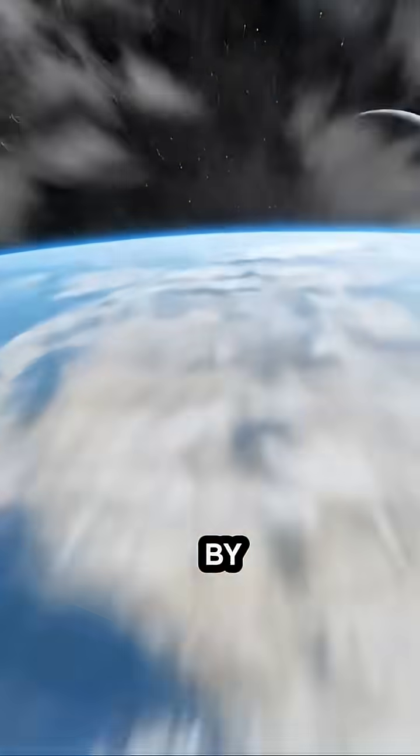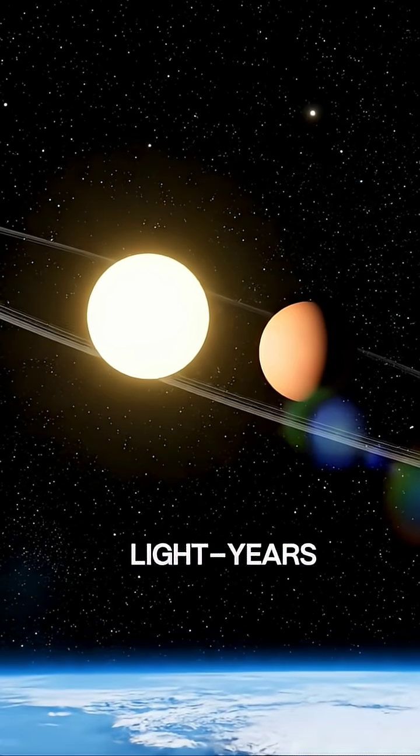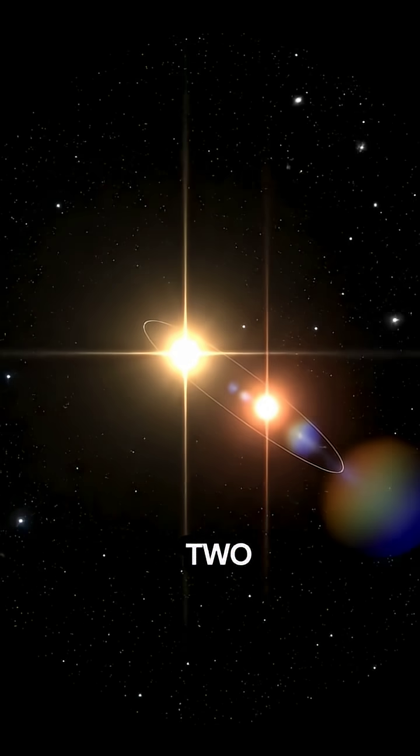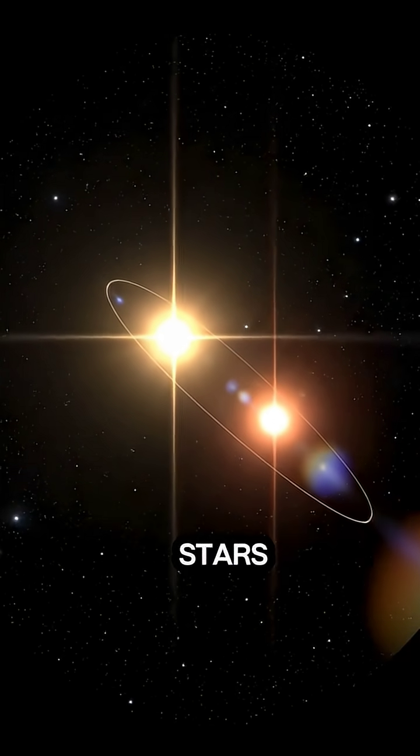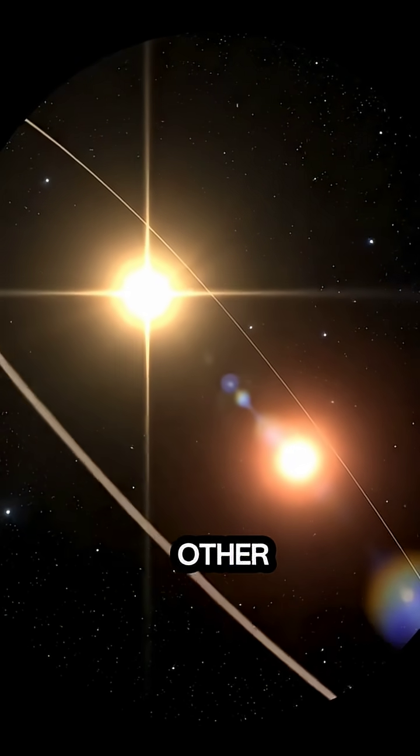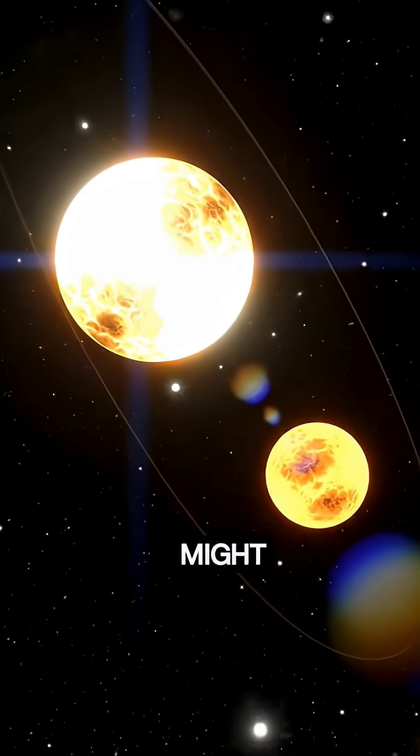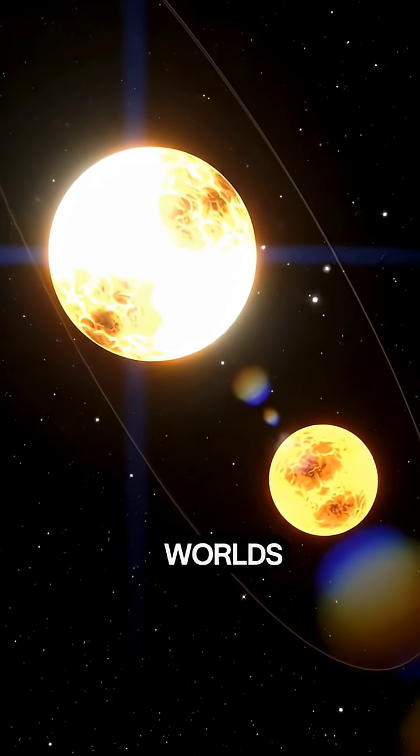Close by is the Alpha Centauri binary system. Around 4.37 light years distant. Two sun-like stars revolve around each other. A vision of what a double sunrise might look like from any worlds there.